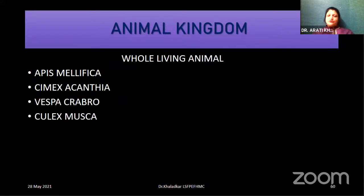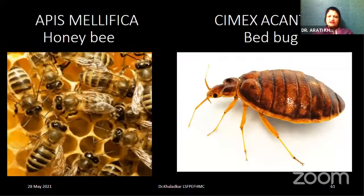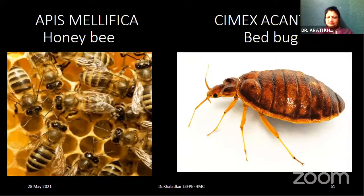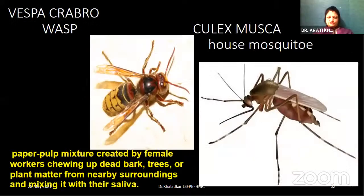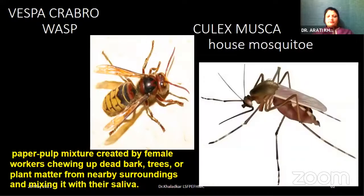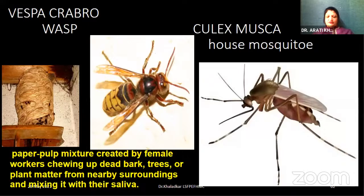Let us see examples in the animal kingdom. Whole living animals — for better understanding and remembrance — number one: Apis mellifica, the honeybee. Then Cimex lectularius, the bed bug. Then Vespa crabro — a very unique feature is that it makes a paper pulp mixture; the female workers chew up the dead parts of trees or plant matter, mix it with their saliva, and prepare a paper pulp mixture. Then Culex musca, the house mosquito.